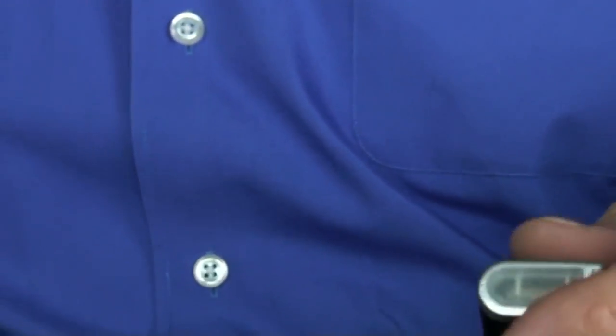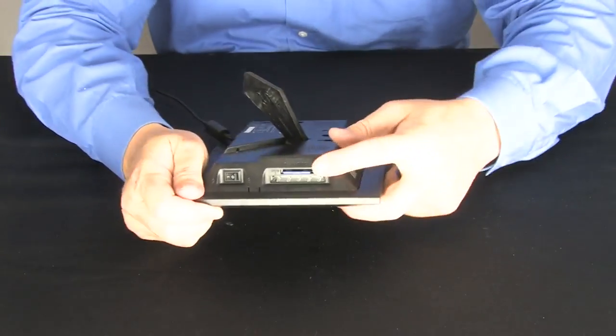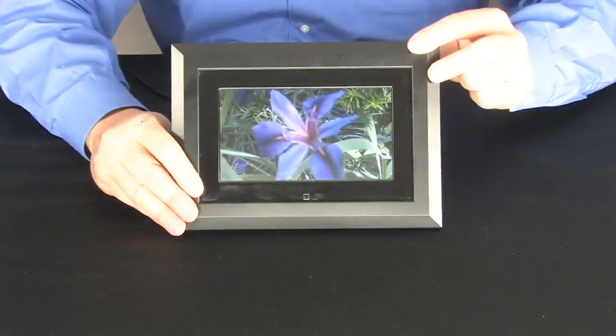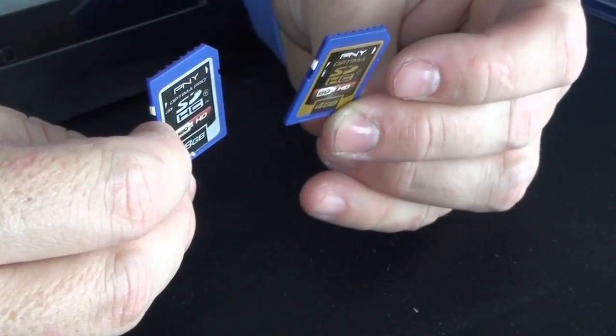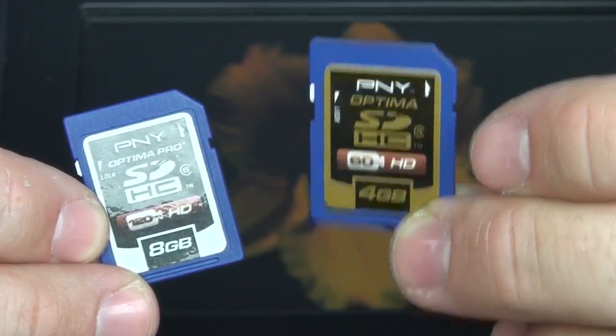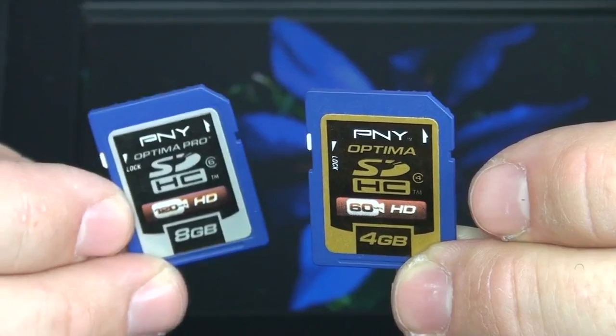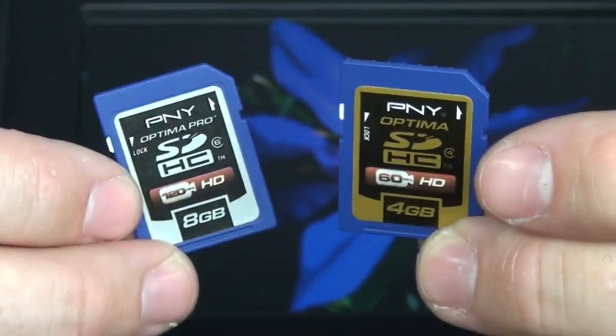Now one last thing I want to show you which I think is really cool is these new digital picture frames. The card slips right into the slot right here and then you can share your photos with friends and family. So whether you have a 4 megabyte a second Class 4 SDHC card or a 6 megabyte a second Class 6 SDHC memory card, there is a solution for every lifestyle.